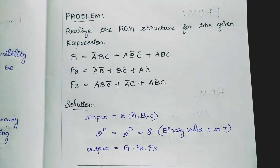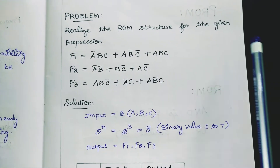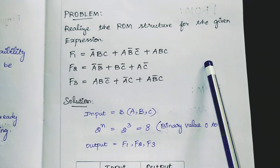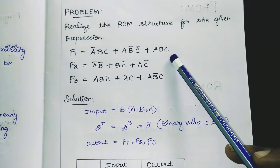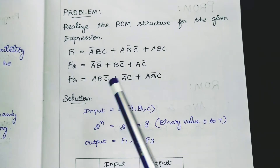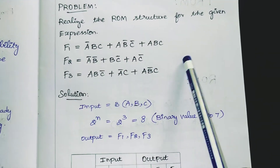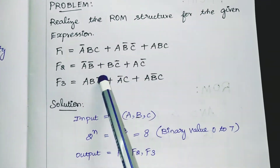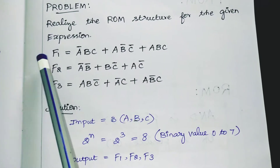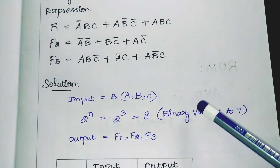Let's get into the problem. The question is to realize the ROM structure for the given expressions. The three expressions are F1, F2, and F3, where A, B, C are the three inputs and F1, F2, F3 are the three outputs.